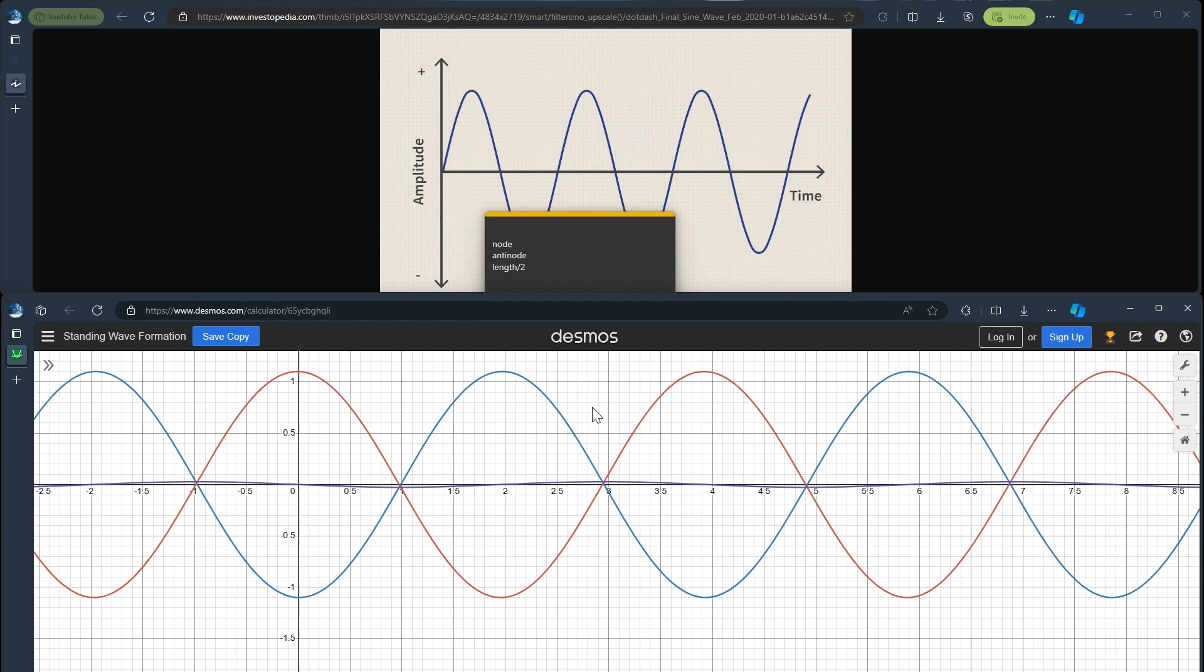You might want to see what's the distance between the antinode and the node of the two waves. It starts from here, and the node here, we have half the length. And obviously, if we take the amplitude here compared to the node here, it will be a quarter of the wavelength.